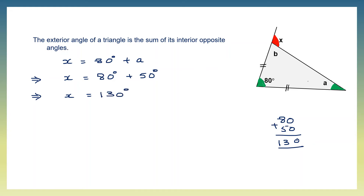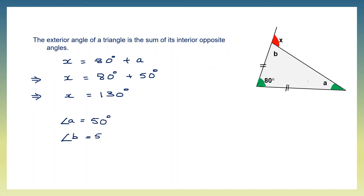So now we have found all our angles: angle a is 50 degrees, angle b is 50 degrees, and angle x is 130 degrees.